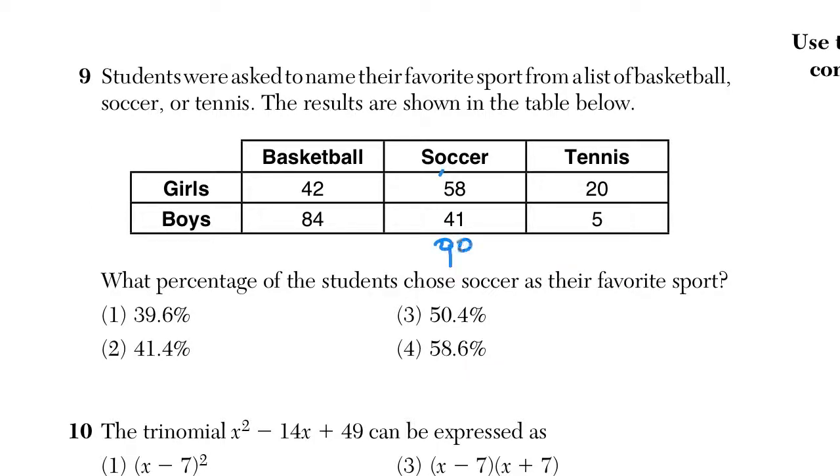It looks like 99. Sometimes with these tables they have a little row that says total and a column that says total. This one makes it a little bit tougher that we have to do some of the basic arithmetic first. So 99, and now out of what? How many students were in this poll? If we add up all six values here, I believe we get 250.